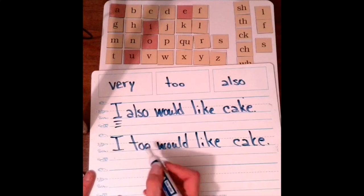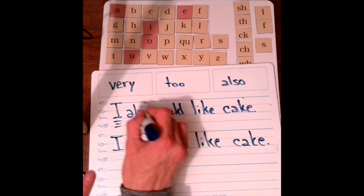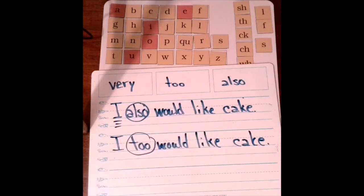Again, the word too can go in place of the word also. Alright, so if you have the word very in a sentence, you could replace it with the word too. The word too with two o's. If you have the word also in a sentence, you could replace it with the word too with two o's.